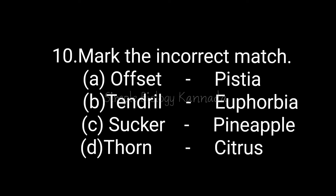Last question: mark the incorrect match. Option A: offset — Pistia, correct match. Option B: tendril — Euphorbia, this is incorrect because Euphorbia is an example of phylloclade, not tendril. Option C: sucker — pineapple, correct match. Option D: thorn — citrus, correct match. So the incorrect match is option B: tendril and Euphorbia, because Euphorbia is a phylloclade example, not a tendril example.